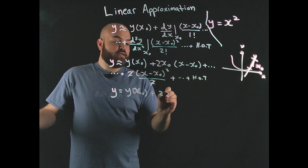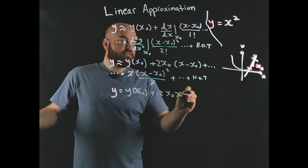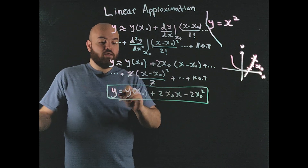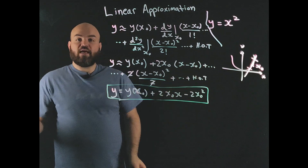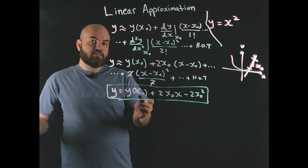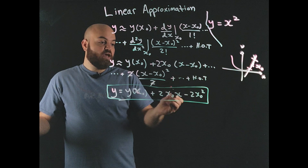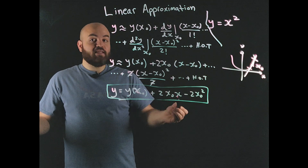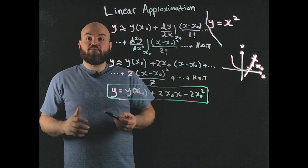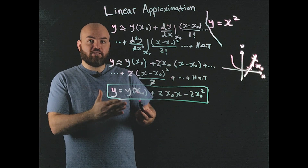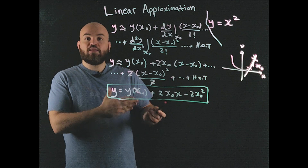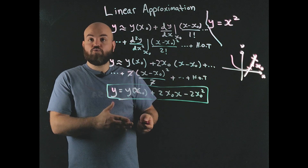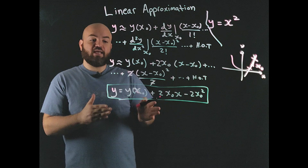Expanding that gives y ≈ 2*x0*x − 2*x0 squared. This is our linear approximation of y = x squared. You can see this is a linear relationship in x, with constants around the operating point. You can verify this is a linear system by applying the superposition and homogeneity conditions — go ahead and prove that to yourself as an exercise.